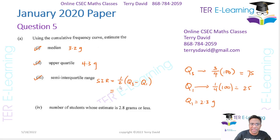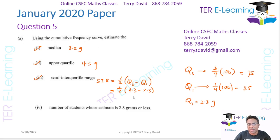So the semi-interquartile range will be one half of (Q3 minus Q1), which is half of (4.3 minus 2.3). That gives 4.3 minus 2.3 equals 2, and half of 2 is 1. So my semi-interquartile range is 1 gram.